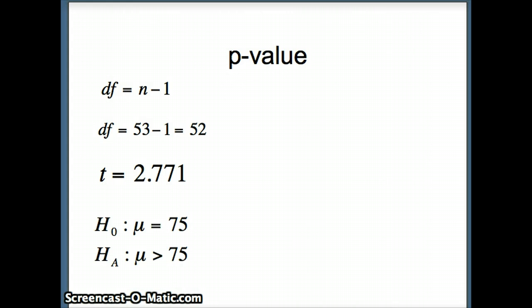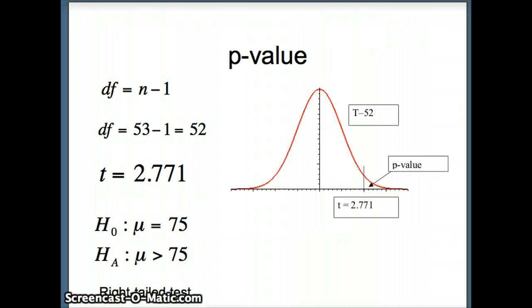Our test statistic t that we just found was 2.771. Here is our null and alternative hypothesis. You'll recognize that this is greater than, so this is a one-tailed test to the right, a right-tailed test. We're going to have our test statistic t, 2.771, on a t distribution of 52 degrees of freedom, and our p-value will be to the right of that value.